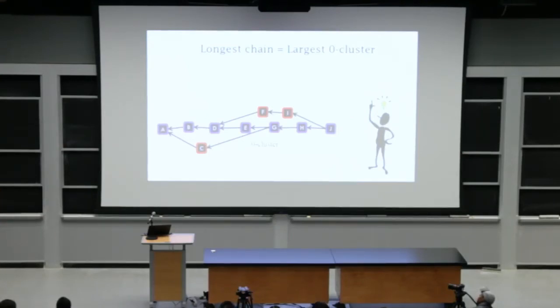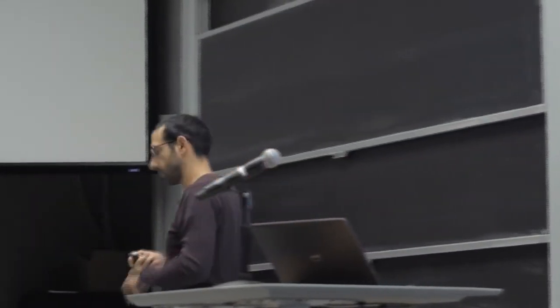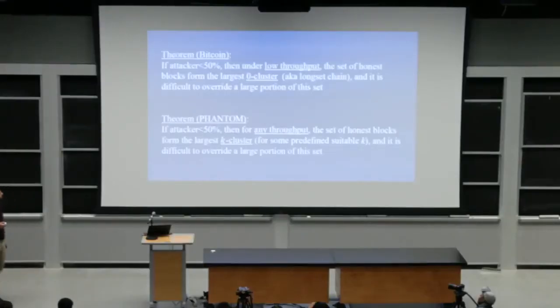So when Satoshi decided that the longest chain is the only chain that you should maintain and you should discard the rest, this is essentially, this essentially reduces to picking the largest zero cluster. Whereas we pick in a larger, more rich setup, we pick the largest K cluster.